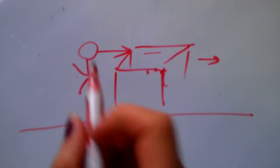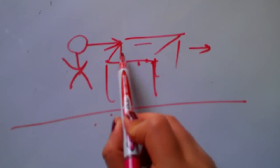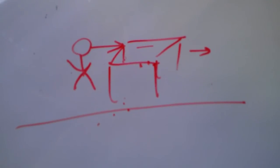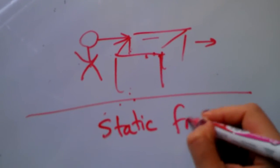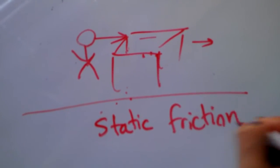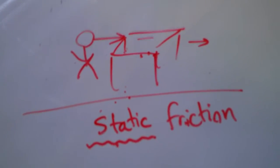So if the table is not moving, if the desk is not moving although I'm pushing it, this is called static friction.